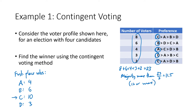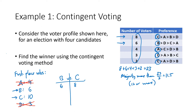In the B versus C matchup: 8 voters prefer C and vote C; 6 voters prefer B and vote B; 4 voters had A first, so their second choice C gets those votes; 3 voters had D first then A, so they vote their third choice B; and 2 voters at the bottom like C best, so they vote C. B gets 9 votes, C gets 14 votes — C is the contingent voting winner.